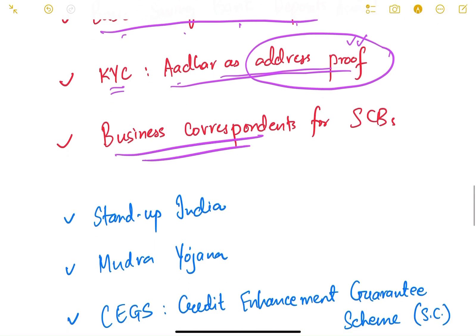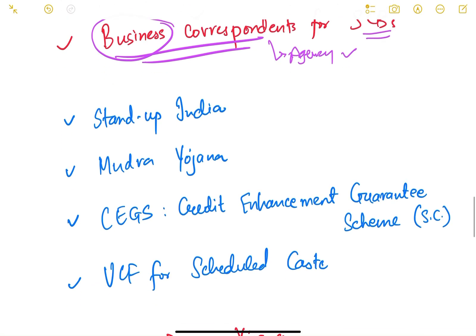The Business Correspondent scheme was introduced for scheduled commercial banks, allowing any agency, person, or NGO to act as an agent between bank customers and the bank. These correspondents help people in opening bank accounts, doing transactions, learning how to use ATM and debit cards, and providing financial literacy.